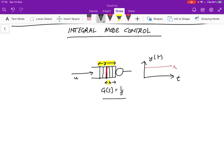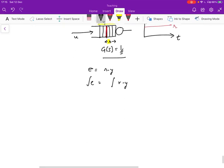Remember that the error value E is nothing more than R minus Y. And so integral of E is going to be integral of R minus Y. And so in our case, we're going to see that the control input U is going to be KI times integral E, and that's going to be KI integral of (R minus Y)dt. And that is what we call the control law.